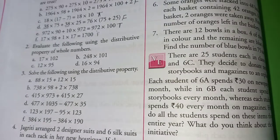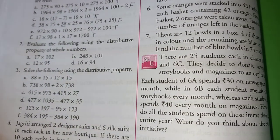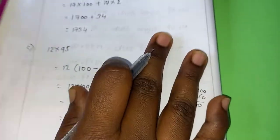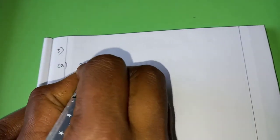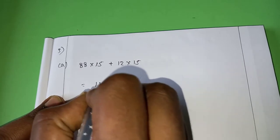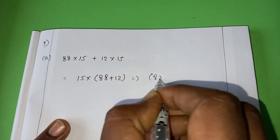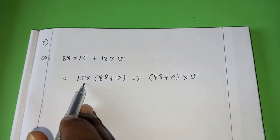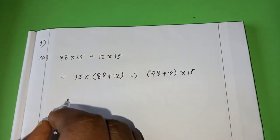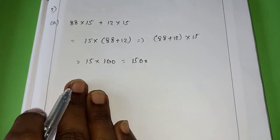Next. Solve the following using the distributive property. We have to solve these questions using the distributive property. Here also, I will explain 1 or 2 questions. You have to do remaining by your own. Please copy the complete question. 3rd one, A, 88 into 15 plus 12 into 15. So which is the common here? 15 into 88 plus 12. This you can also write like this. 88 plus 12 into 15. Both are same. 15 into 88 plus 12, 100. So the answer is 1500.